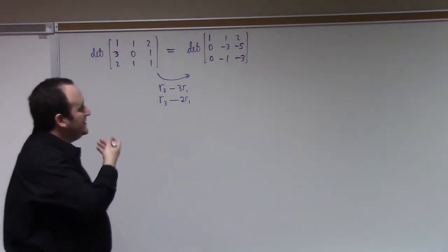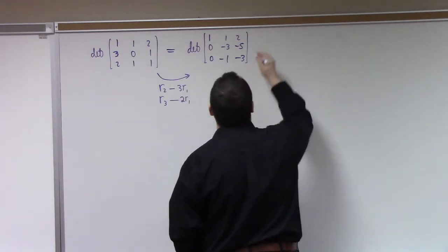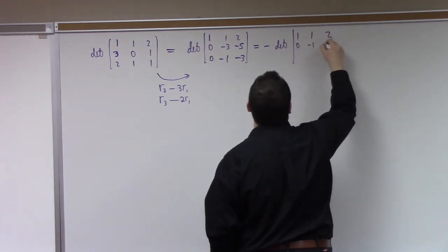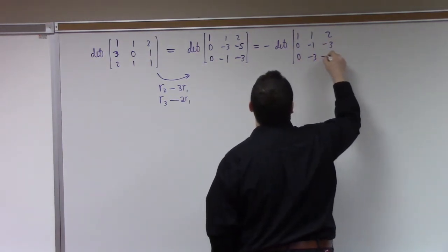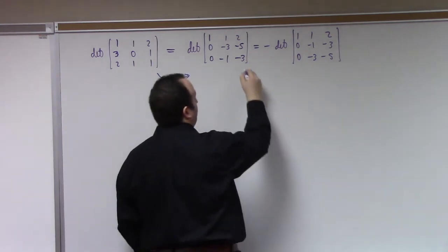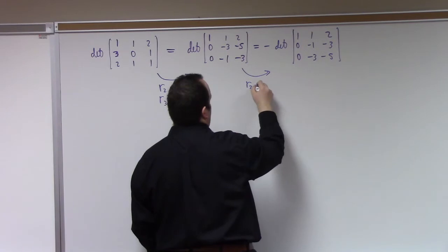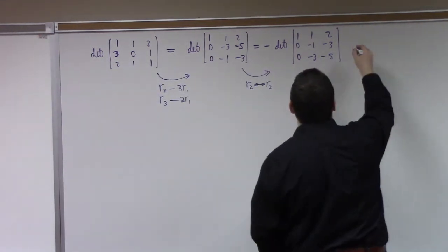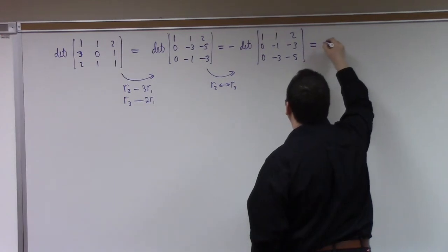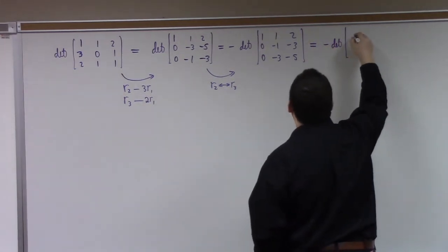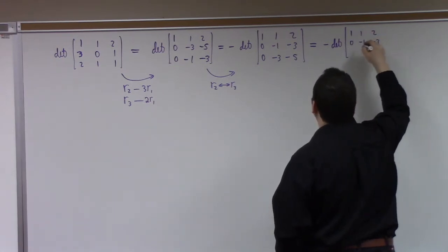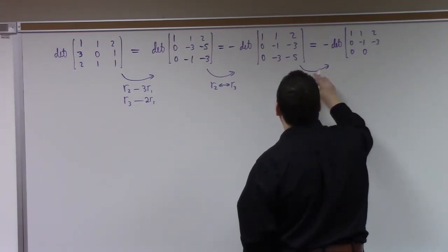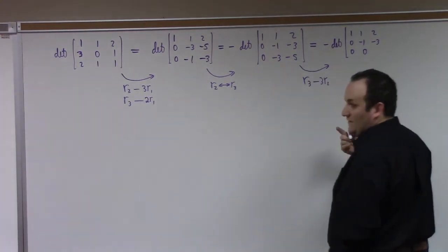Then we do row 3 minus 3 times row 2, which is a type 3 operation — that doesn't change the determinant. So it's still equal to minus the determinant of 1, 1, 2; 0, minus 1, minus 1; 0, 0, 4. The determinant of a triangular matrix is just the product of the diagonal entries. I should have said that on Monday — the determinant of a triangular matrix is the product of the diagonals.